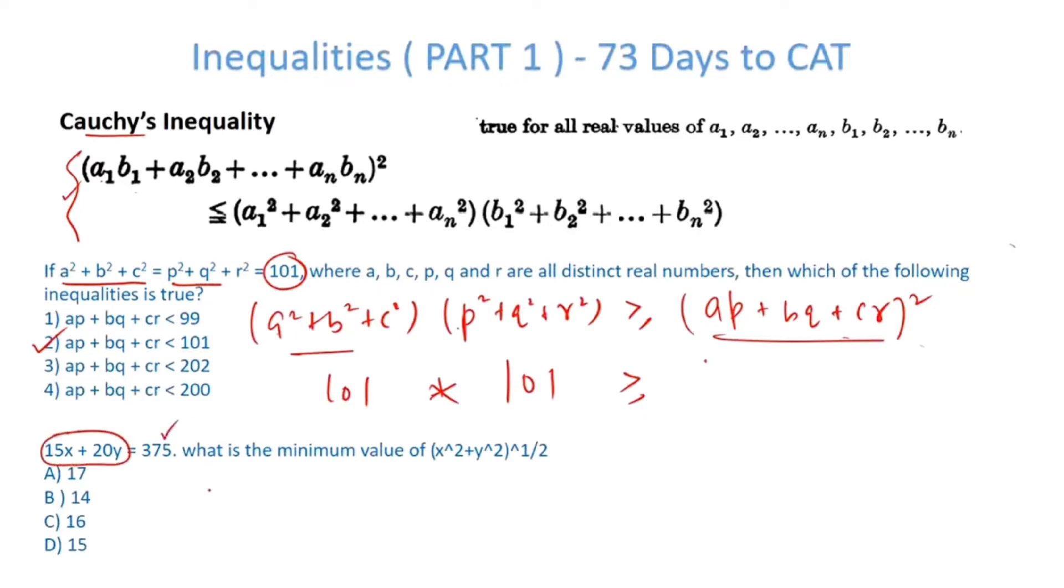15x plus 20y is equal to 375. Now have a look at this. We can say that 15x plus 20y squared must be less than equal to 15 squared plus 20 squared into x squared plus y squared.